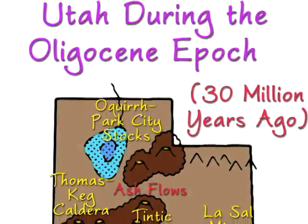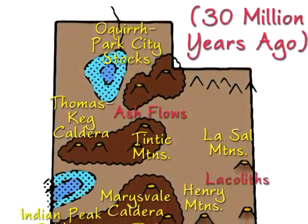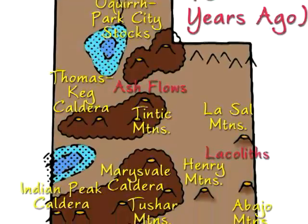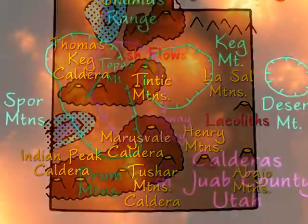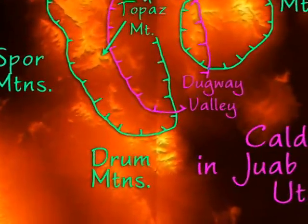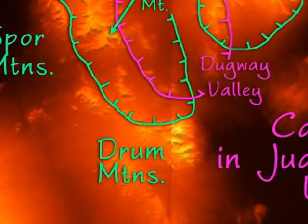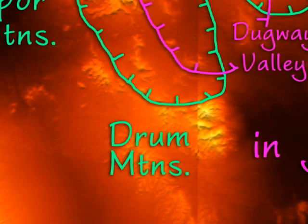In the first phase, quartz-rich magmas formed the calderas and ash flows that covered much of the area, and produced the gold, copper, and manganese deposits of the Detroit district in the Drum Mountains.